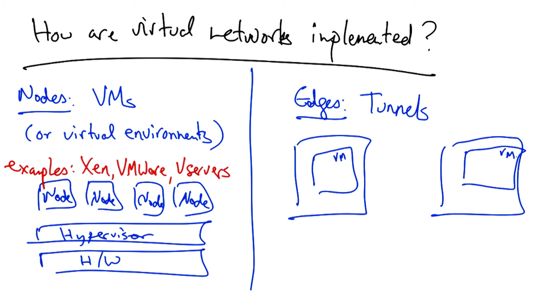In a virtual network, we need to connect these virtual machines. Each virtual machine or virtual environment has its own view of the network stack. We may want to provide the appearance that these nodes are connected to one another over a layer two topology, even if they are in fact separated by multiple IP hops.